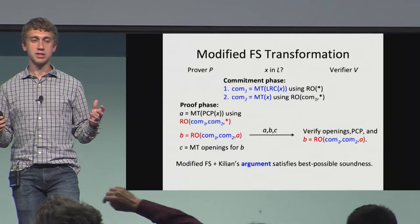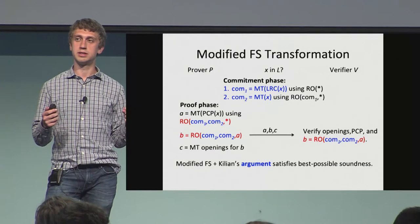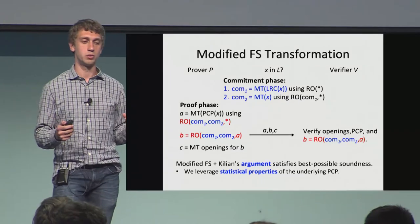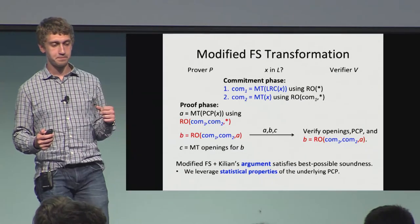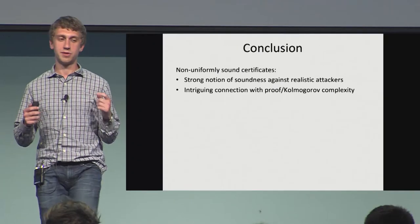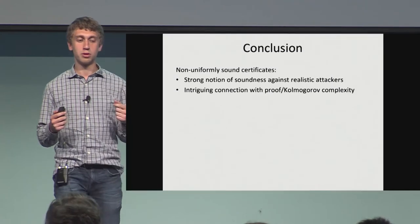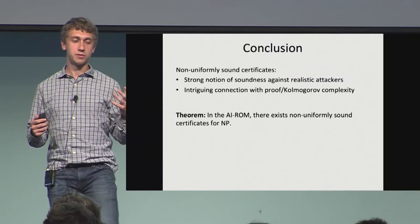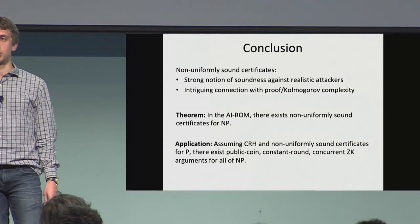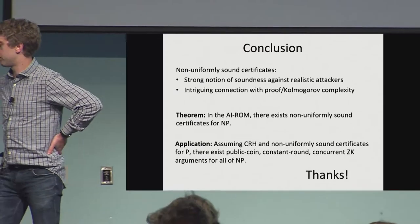We show that this modified Fiat-Shamir transformation, when applied to Killian's computationally sound argument, satisfies best-possible soundness. This won't work in general for all arguments, but in the paper we show that if you restrict to three-round proofs, you can use the statistical properties of the proofs to show best-possible soundness is achieved. It's the statistical properties of the underlying PCP and Micali's CS proofs that allow us to prove this result. To conclude: we gave this new notion of non-uniformly sound certificates — the best possible thing achievable against realistic attackers, viewable through the language of Kolmogorov complexity. We show they exist, we can construct them, and they're useful for constructing constant-round concurrent zero-knowledge protocols. Thank you for listening.